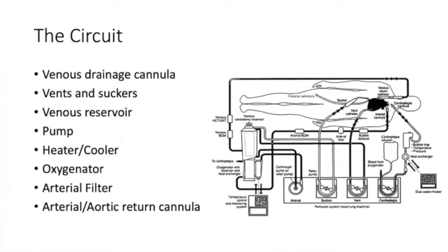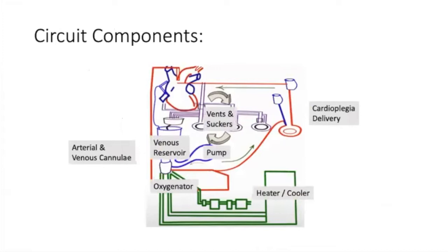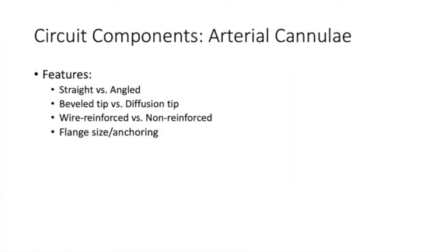The circuit is frequently shown in complex diagrams, so we'll break it down using a simplified version. The key components are your cannulae, your venous reservoir, your oxygenator, and your pump — those are the basics. We'll then add on cardioplegia delivery, vents and suckers, and the heater-cooler paired with the oxygenator. From a simplicity standpoint, the most basic aspects are your arterial and venous cannulae, the pump itself, and the oxygenator.